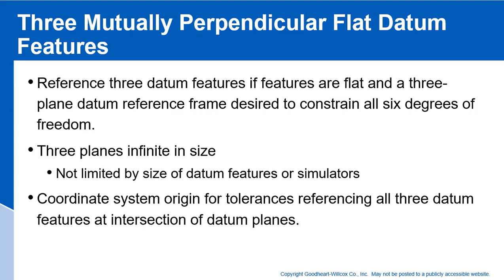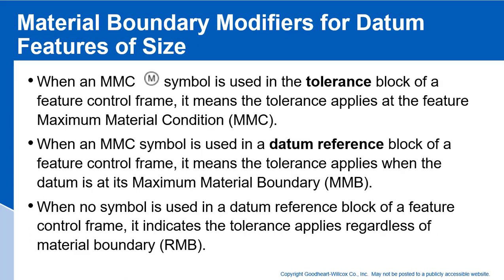We can also use material boundary modifiers. We talked about that MMC symbol — it is M inside of a circle. When used in a tolerance block of a feature control frame, it means the tolerance applies at the feature's maximum material condition. Now we use that same symbol in the datum reference block of a feature control frame, where it means something similar but with a slightly different interpretation: the tolerance applies when the datum is at its maximum material boundary condition.